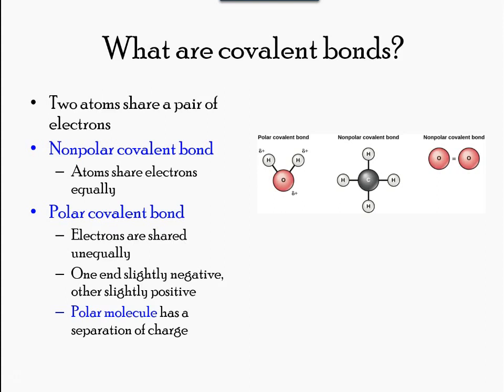These bonds form when an electron is shared between two elements and are the strongest and most common form of chemical bond in living organisms. Covalent bonds form between the elements that make up the biological molecules in our lives. There are two types of covalent bonds: polar and non-polar.